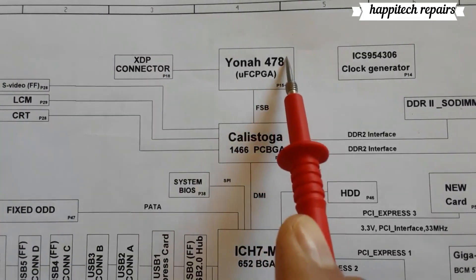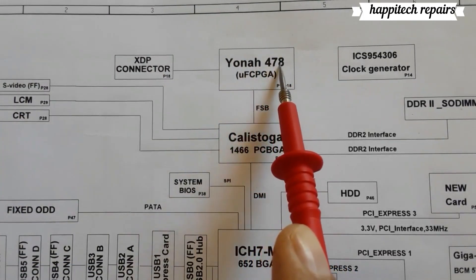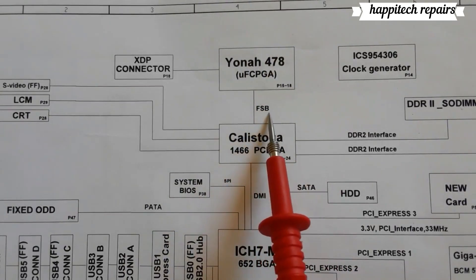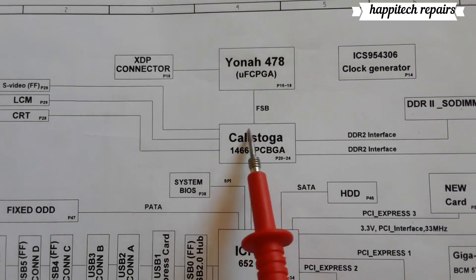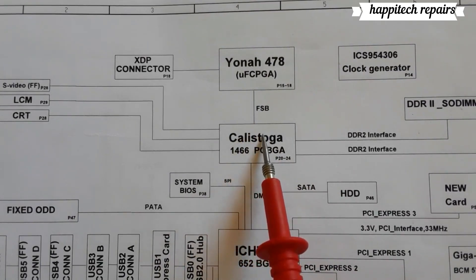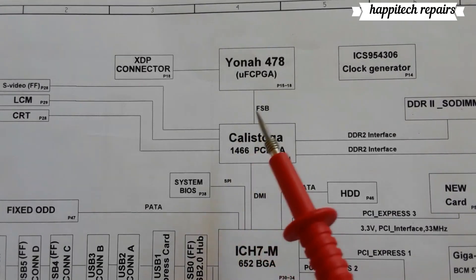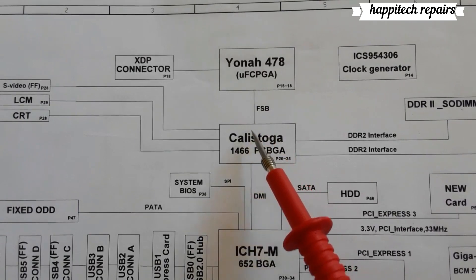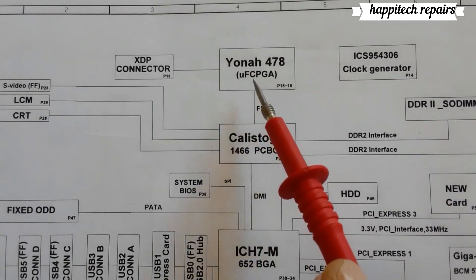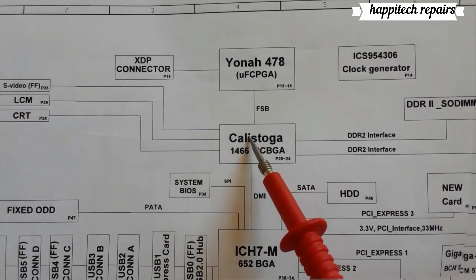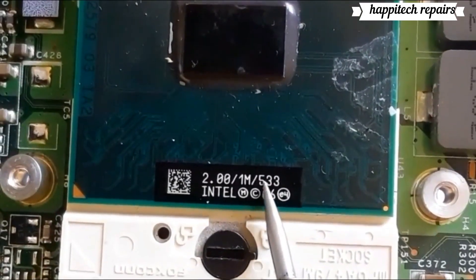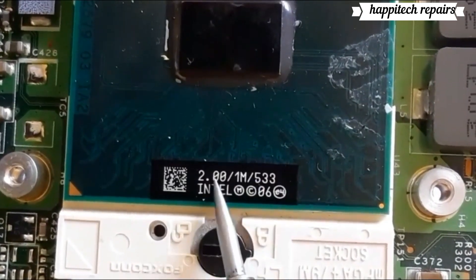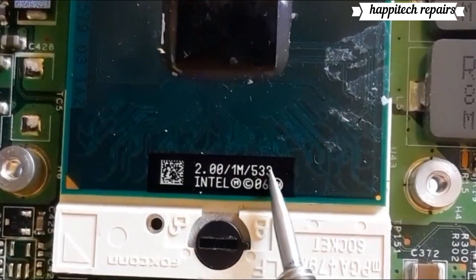As you can see here in the schematic, this is the Socket 478 processor. Here we have the front-side bus — the bus that connects the processor to the Calistoga North Bridge. The FSB is the bus that connects between the processor and the North Bridge. In some processors you can find the frequency of this bus. As you can see here in this processor, we have 533, meaning 533 megahertz — that is the frequency of the front-side bus.